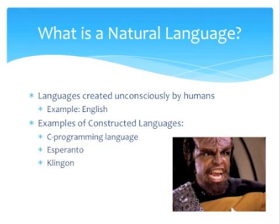First, let's start by defining what is a natural language. A natural language is formally defined as any language that arises unpremeditated in the brains of human beings. Essentially, most languages that you've ever spoken or heard of fall in this category. Here are some examples in order of decreasing formality: British English, African American Vernacular English, LeetSpeak. All of these are natural languages.